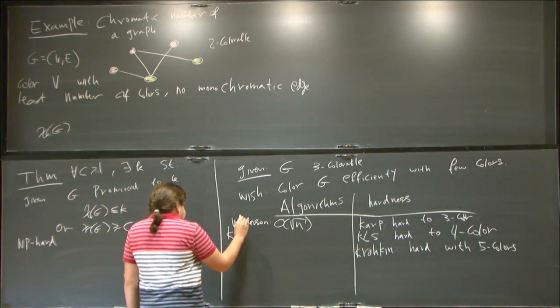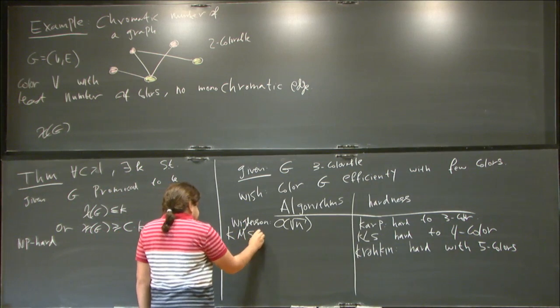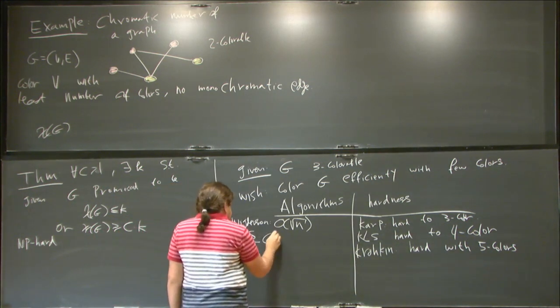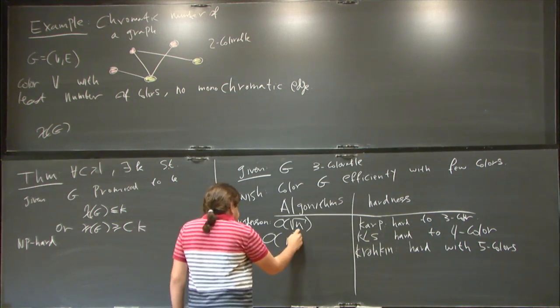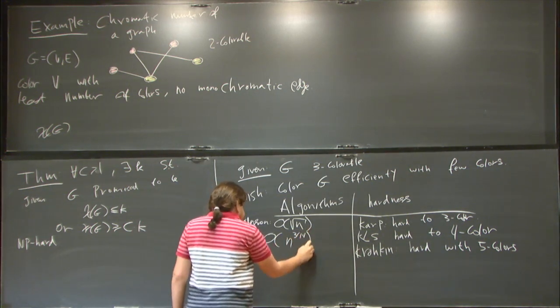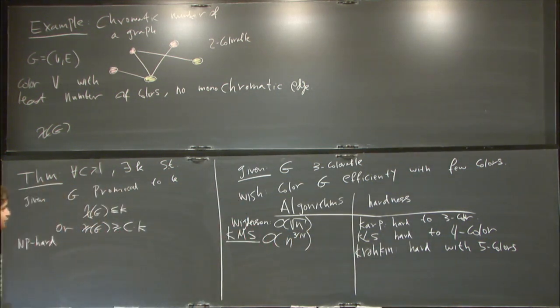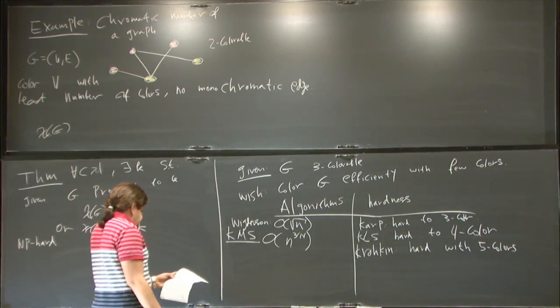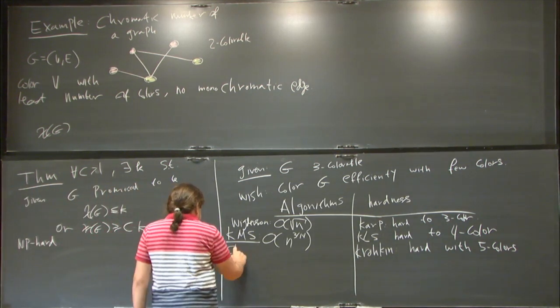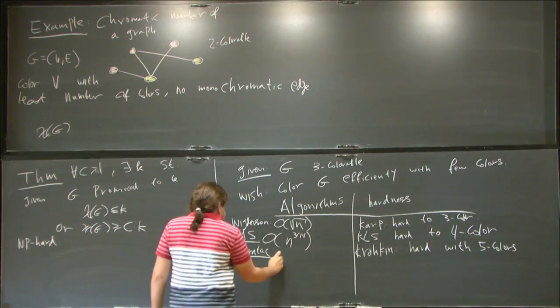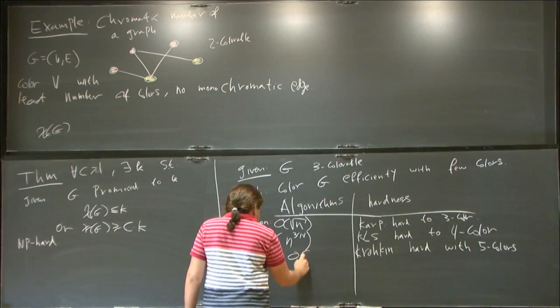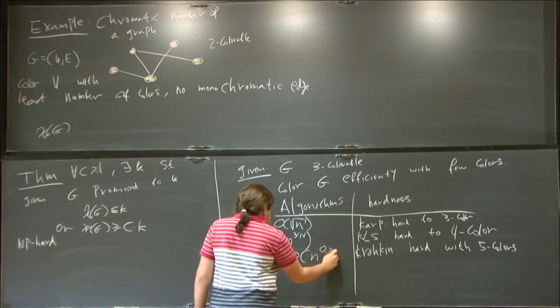Following that, Karger, Motwani, and Sudan, they improved it to O of n to the three over 14. This was further improved by Kawarabayashi to a bit more than 0.2.